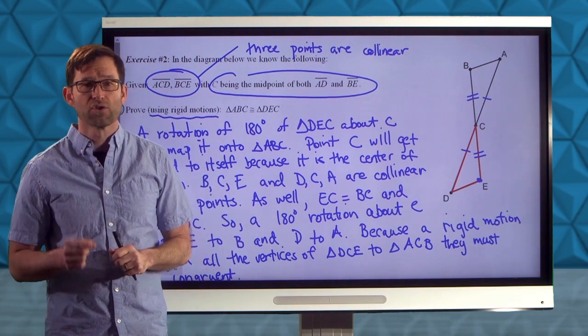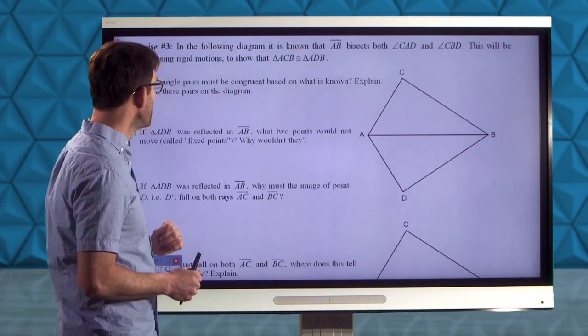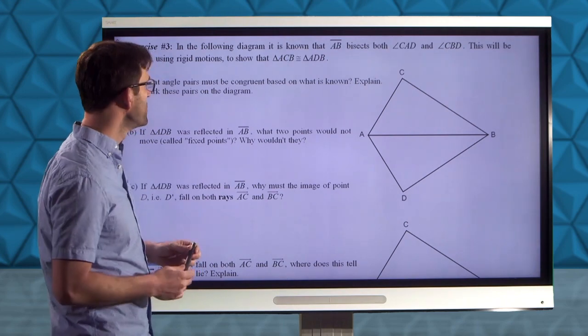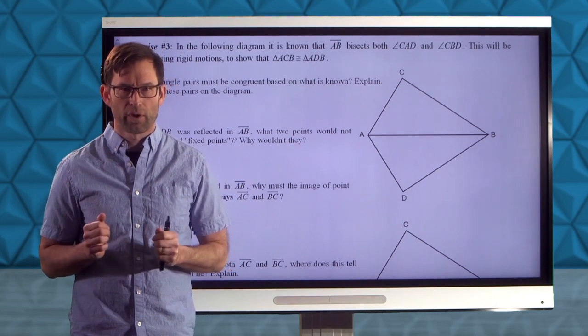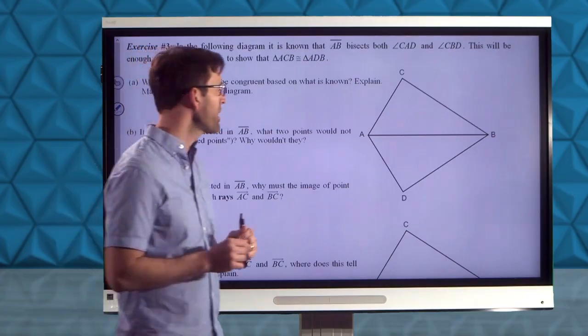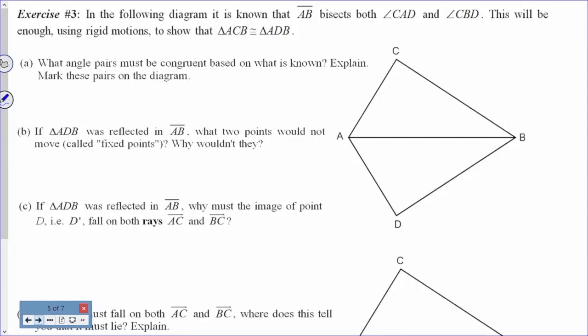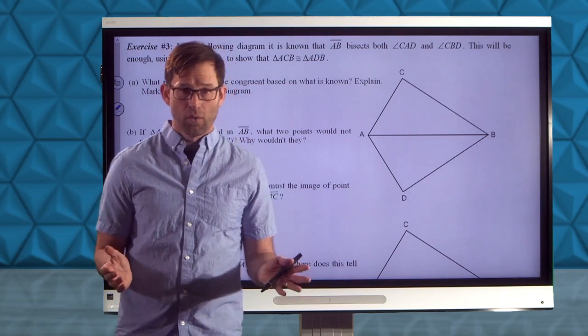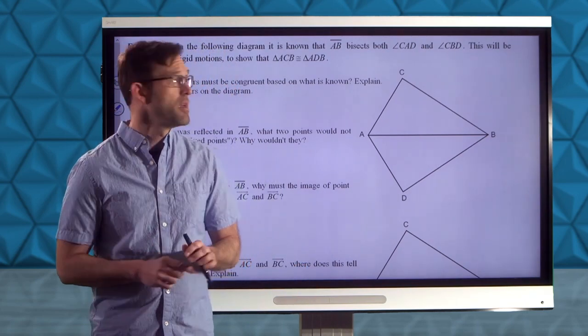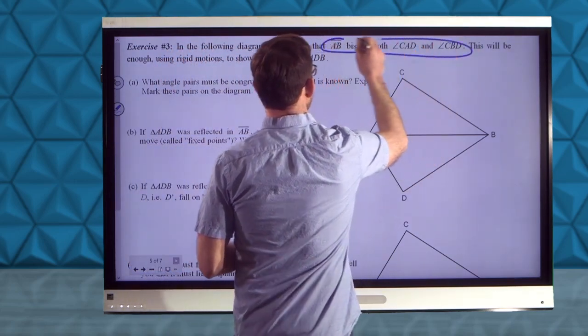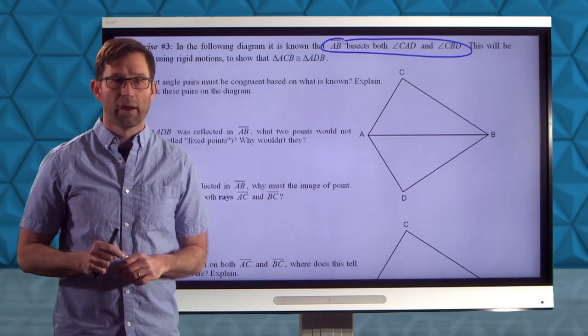Exercise three is the most challenging one. In the diagram, it's known that AB bisects both angle CAD and angle CBD. This will be used, with rigid motions, to show that triangle ACB is congruent to triangle ADB. Letter A asks: what angle pairs must be congruent based on what is known? Mark these pairs on the diagram.